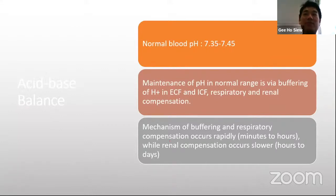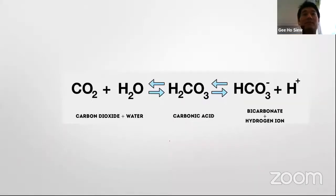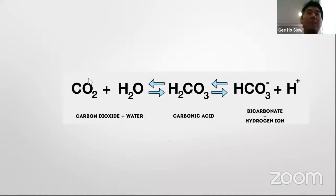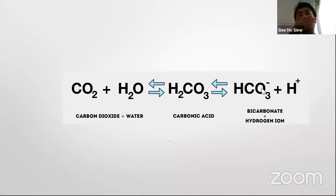The buffering and respiratory compensation occurs quite rapidly — within minutes to hours — whereas renal compensation occurs much more slowly, usually hours to days. This is our basic chemistry: normal metabolism produces CO2 and water, forming carbonic acid, which dissociates in plasma into acid and base. This is essentially our body's bicarbonate buffer system, which operates in two directions.